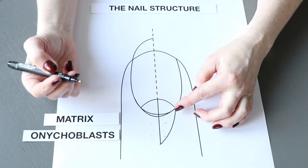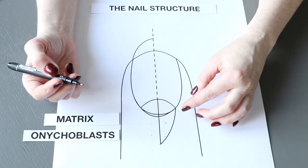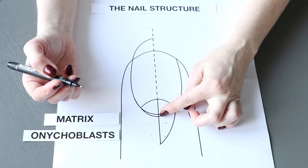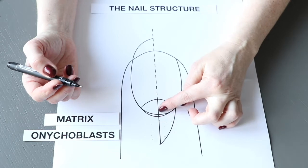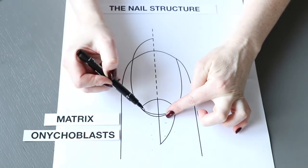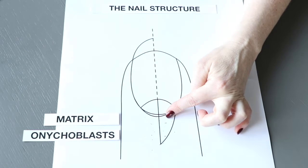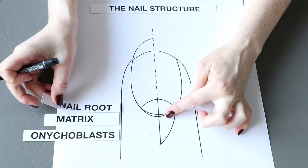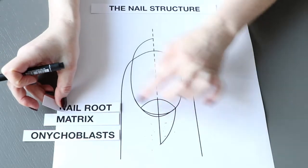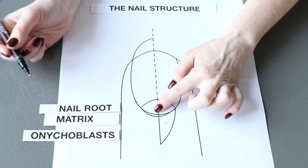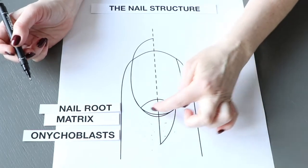Also in this zone we have the root of the nail. It is very important not to damage this area, as this is the only part that cannot be restored. Any injuries or disorders to this area can affect nail growth and can even potentially lead to nail deformation.